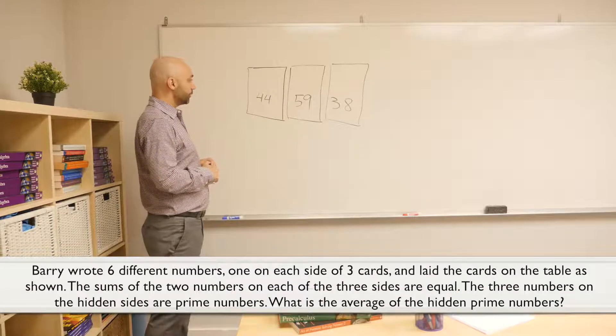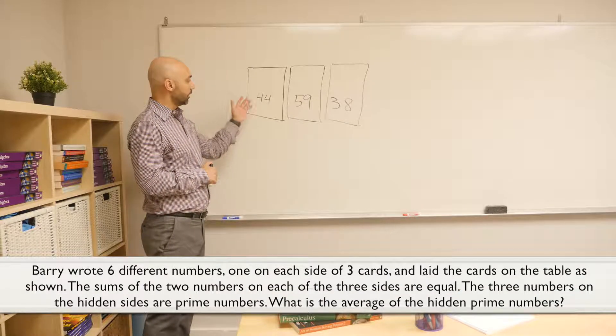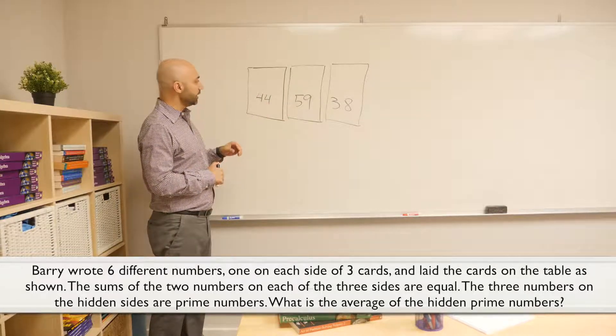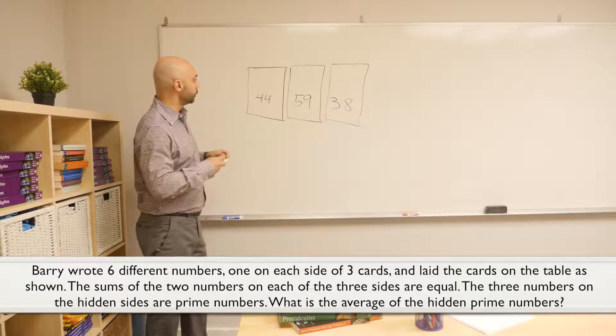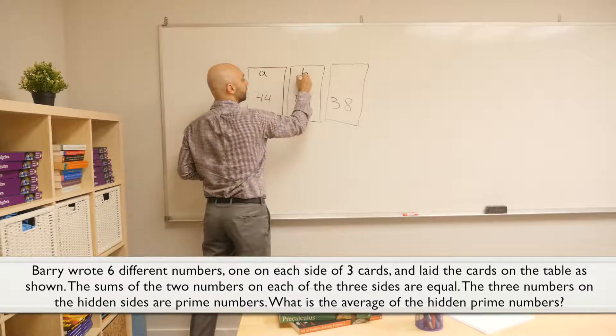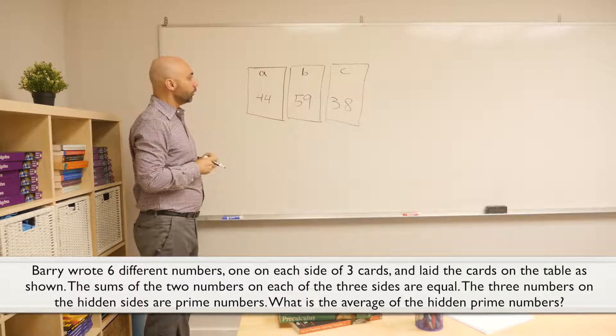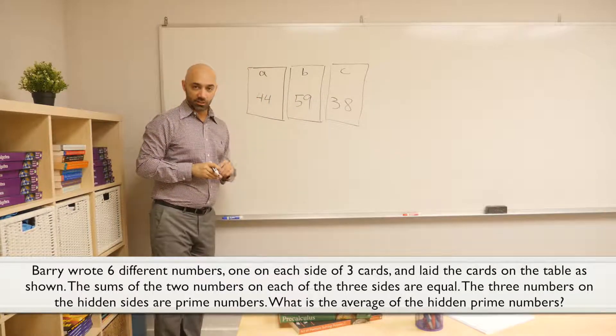In this problem, Barry has three cards with numbers written on the face and on the back of them. These are the numbers on the face, and there's three prime numbers in the back. I'm going to call them A, B, and C. We can see the prime numbers, so we know that all six numbers are different.